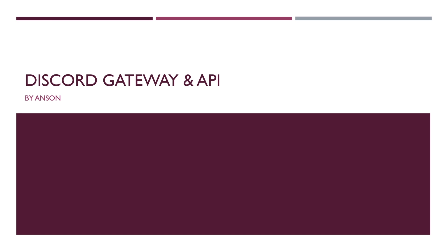Hey, what's going on guys, it's Anson here. We're back with a brand new video and I wanted to get started with building out our own Discord bot library so that we can actually connect to the Discord gateway and API and create our own Discord bot. We're going to be using Deno — in case you haven't heard of it, it's a brand new runtime environment, and the person that created Deno is the same creator of Node.js. Let's get started.